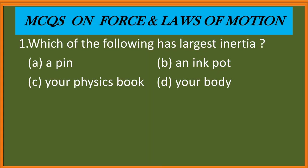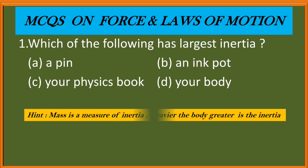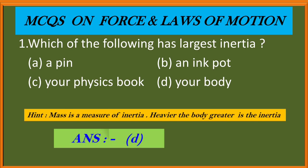Which of the following has largest inertia? A pin, an ink pot, your physics book, your body. Here you can see mass is a measure of inertia. Heavier the body, greater the inertia. So you have to find out the heavier body from the options given here. So your correct answer is D, your body.